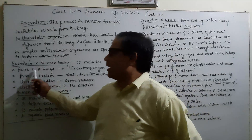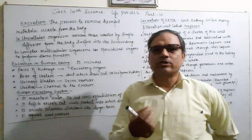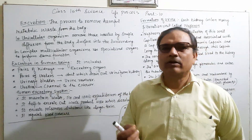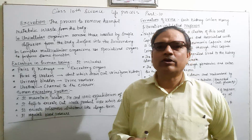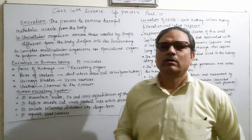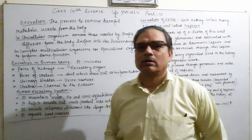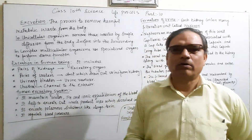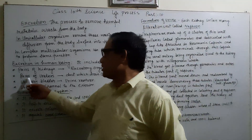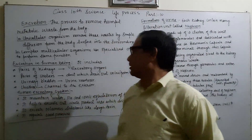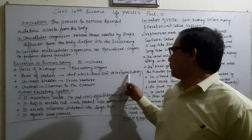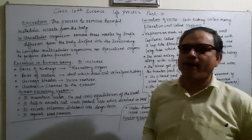The kidney filters nitrogenous waste from the blood. The smallest unit of the kidney is the nephron, which is the smallest unit of the excretory system. The second component is the pair of ureters, which drain urine out from the kidneys.